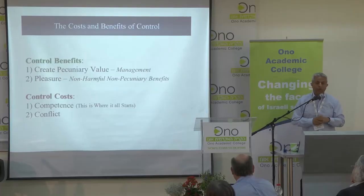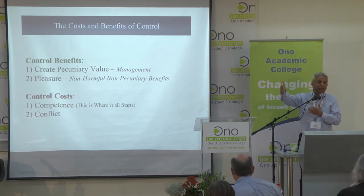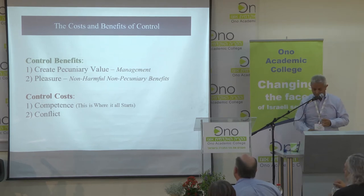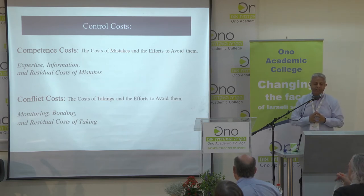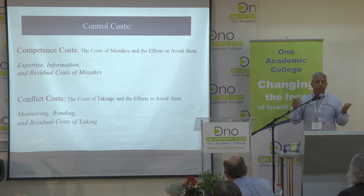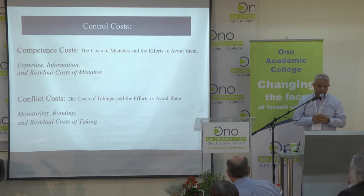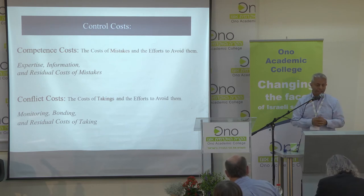On the other side, there are control costs, which include competence costs and conflict costs. Competence costs are the cost of mistakes and the effort to avoid them — including expertise, information to make decisions, and the residual cost of mistakes, since obviously we cannot avoid all mistakes. Conflict costs, much like Jensen and Meckling, include the cost of takings and the effort to avoid them — monitoring (this time including using control rights, meaning the ability to fire the agent), bonding, and the residual cost of takings.